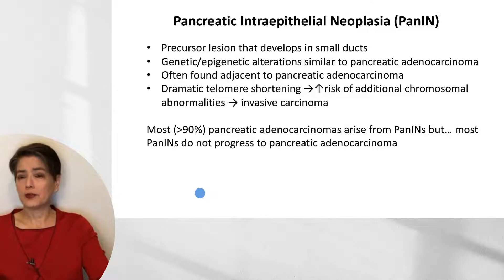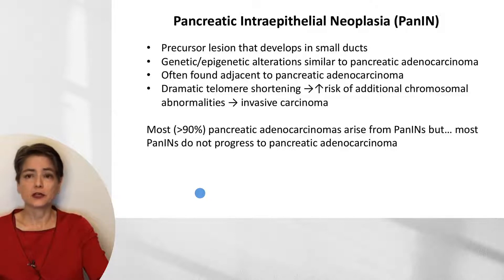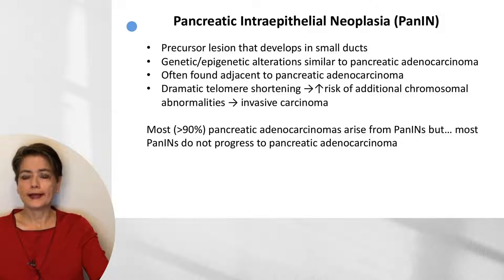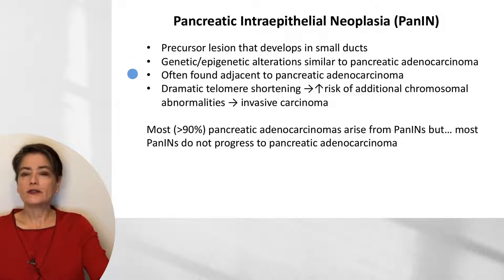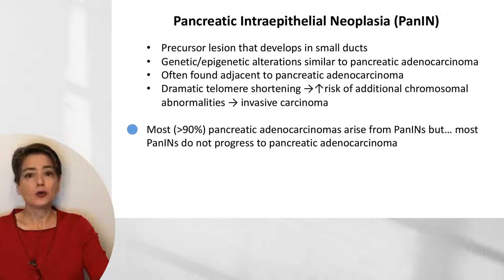As with many carcinomas, there is a precursor lesion. This is called pancreatic intraepithelial neoplasia, or PanIN. It typically develops in the small ducts and is recognized as a precursor because it shows similar genetic and epigenetic alterations to pancreatic adenocarcinoma, and is very frequently found adjacent to invasive carcinoma. More than 90% of pancreatic adenocarcinomas are thought to arise from PanIN.